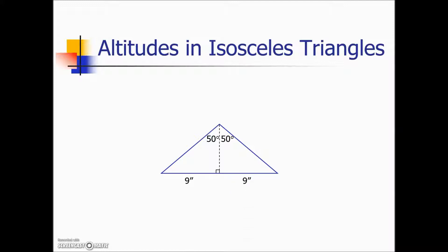Furthermore, it bisects or cuts in half the opposite side. The total opposite side was 18 inches and now each of these two segments, because of that altitude, is cutting it in half. The other property that happens is that it forms two equal right triangles.